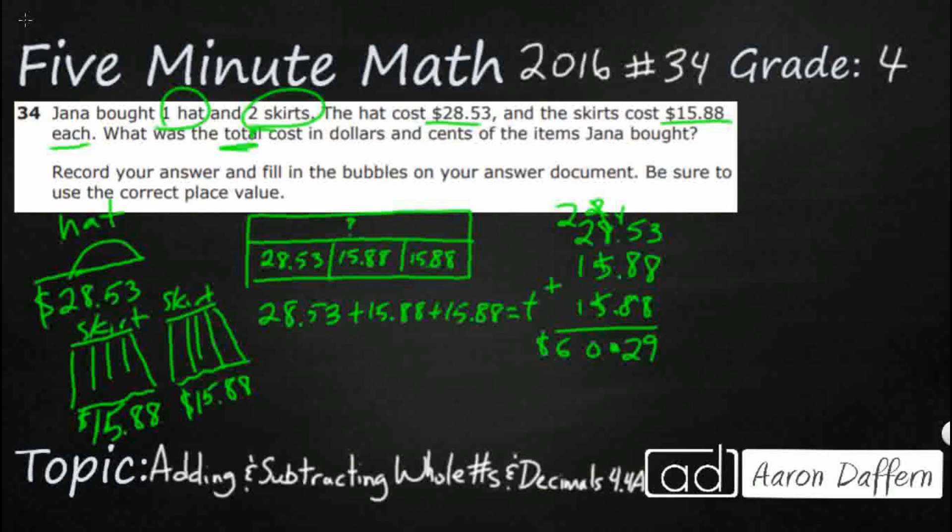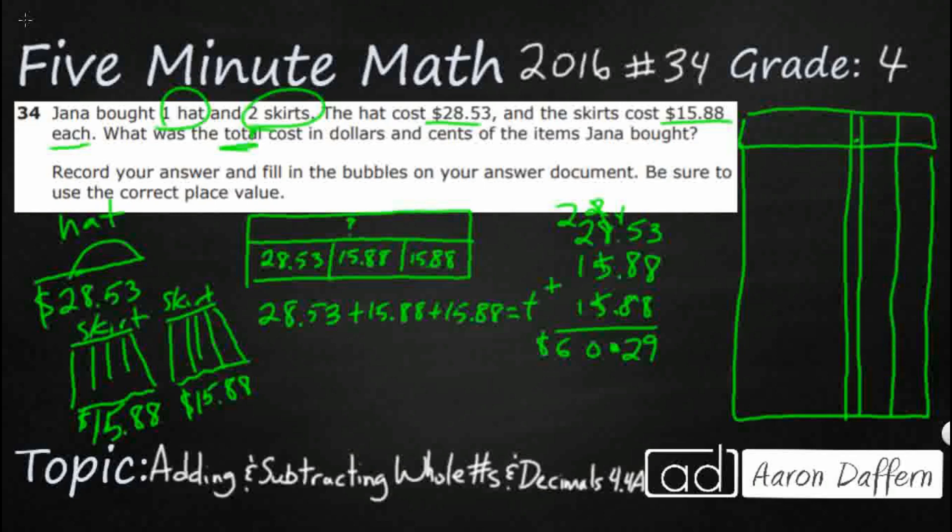What you are going to find is on your answer document, you're going to find this type of griddable response. It's going to be kind of split. You're going to have this really thin line here with the decimal. There's no bubbles underneath that. You're going to have 2 spots to the right of it. That's your tenths and your hundredths. And then you're going to get 3 spots to the left. That's going to be your ones, tens, and hundreds.